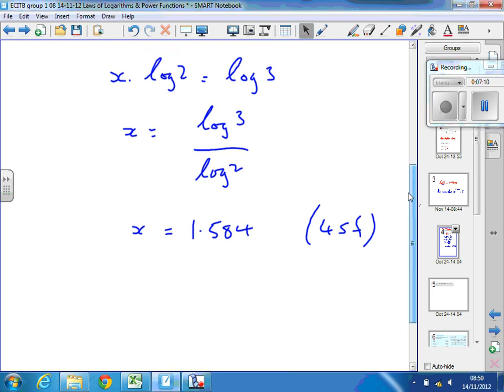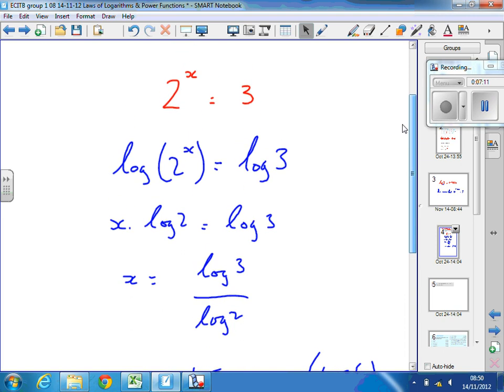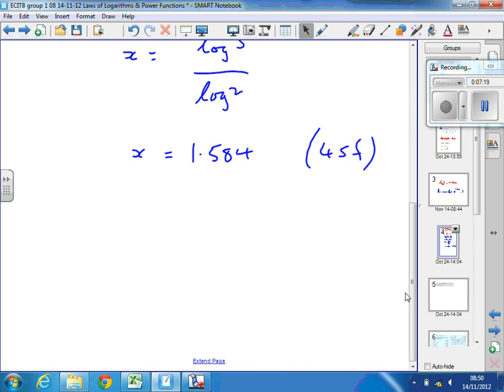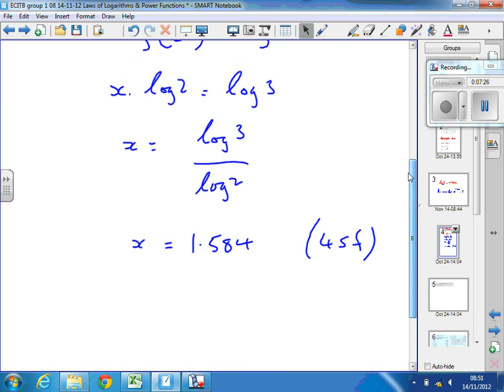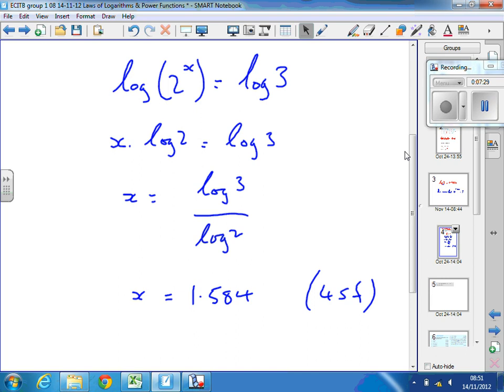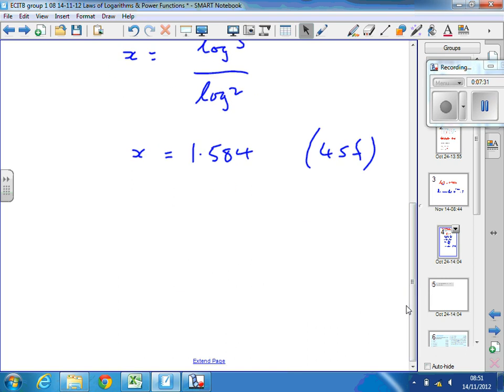But how do we check that that was right? Yeah, it should be 3. We need to check. You can't always look at a textbook or ask me if the answer is right. If you're actually having to do this, as part of a calculation, you need to know that it's right yourself. So, as suggested, 2 to the x should equal 3. So 2 to the power 1.584 is, and you put that into your calculator, and hopefully you'll get the answer 3.